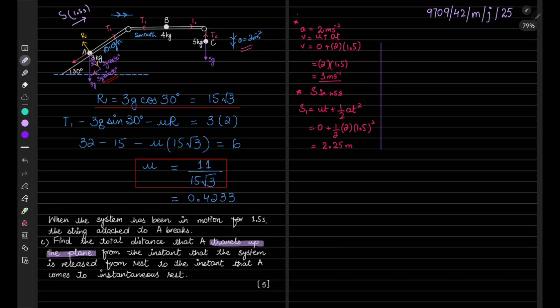First, we have found how much distance it has covered in 1.5 seconds. In this part, first we will find the acceleration with which it is moving up the plane when the string is intact, and then the distance it has traveled with that acceleration.